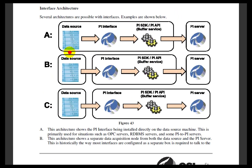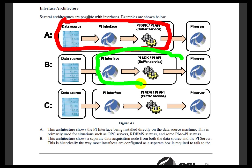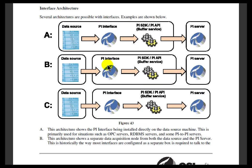There are a couple of ways to architect these Interfaces. Option A places the Data Source, Interface, and software layer — our SDK, API, and Buffering Server — all on the same computer. The Data Source is the equipment generating data, such as PLCs or a Control System. You can install the Interface and Buffering Service on that same machine, and in some cases that's the best architecture.